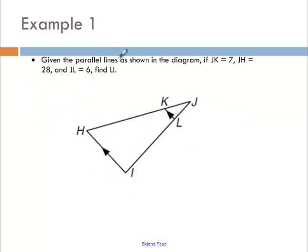In example 1, given the parallel lines as shown in the diagram, let's start labeling. JK is 7, JH, this entire side is 28, JL is 6. I need to find LI.